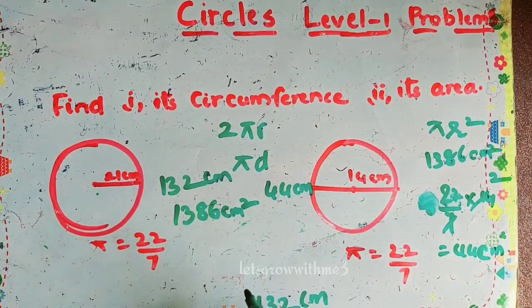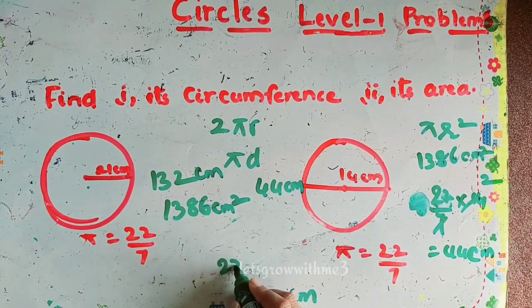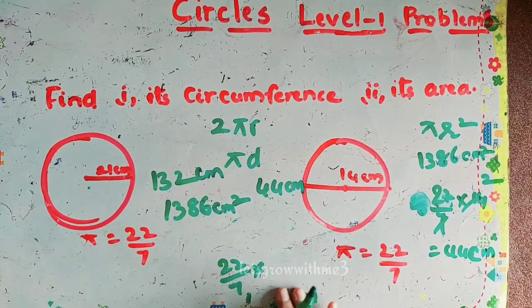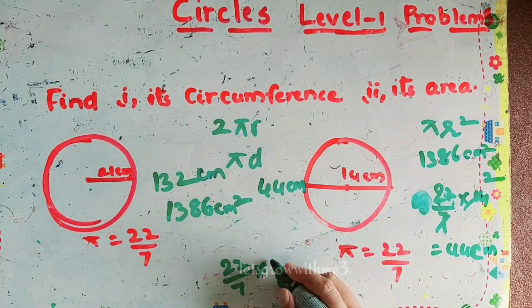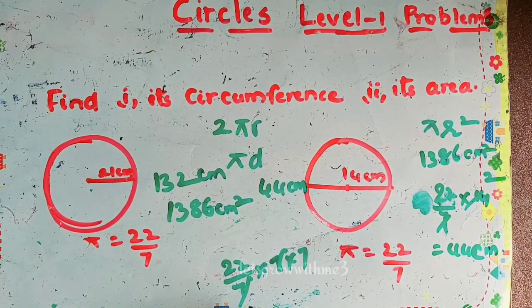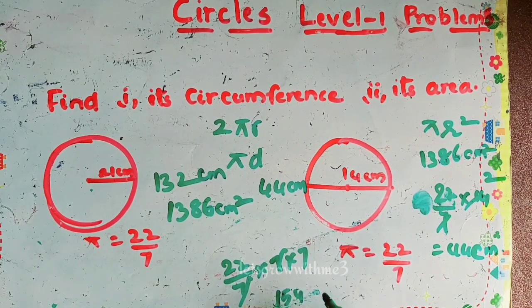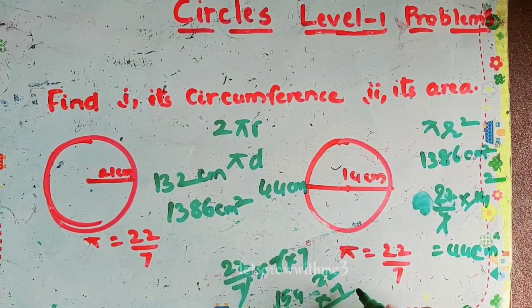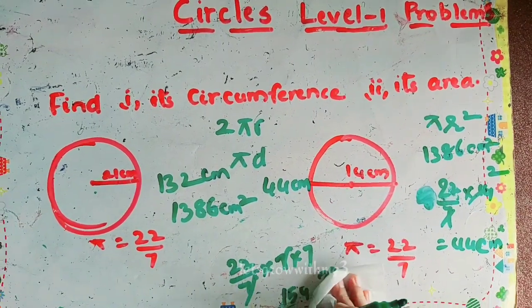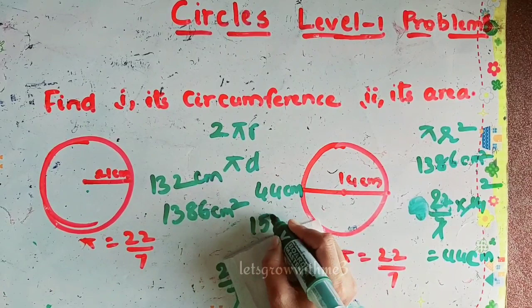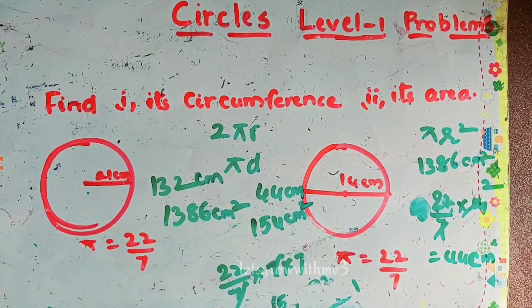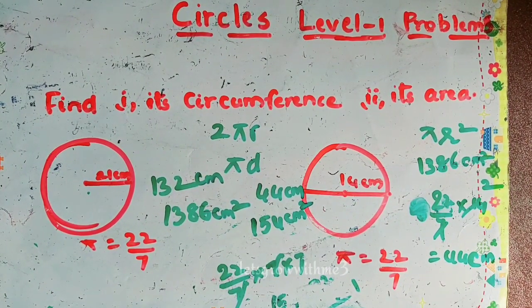Now let's calculate the area. It is 22/7 times r², and radius is 7, so 22/7 times 7 times 7. Taking out common factors: 7 into 7 is 1, giving 22 times 7, which is 154. So the area of this circle is 154 cm².